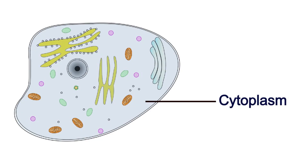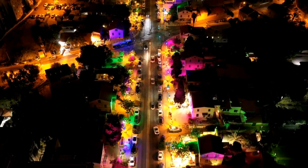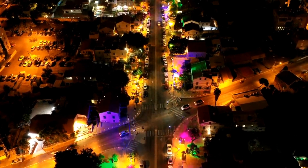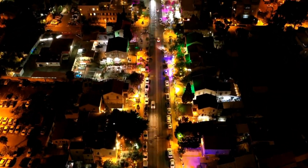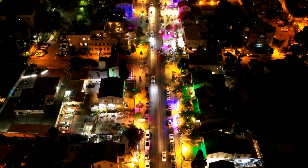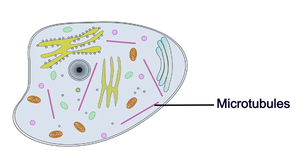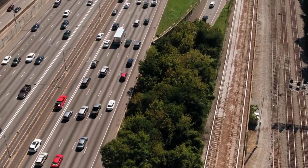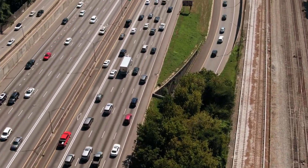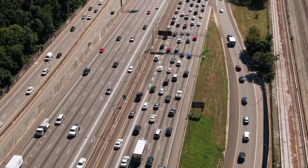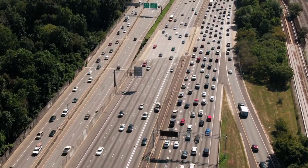The actual surface the city is built on is the cytoplasm. The cytoplasm keeps every part of the cell separate and provides additional storage space. An important feature of a city is transport, and the microtubules are the highways of the city. They are needed to transport resources around the city in a quick and efficient way.